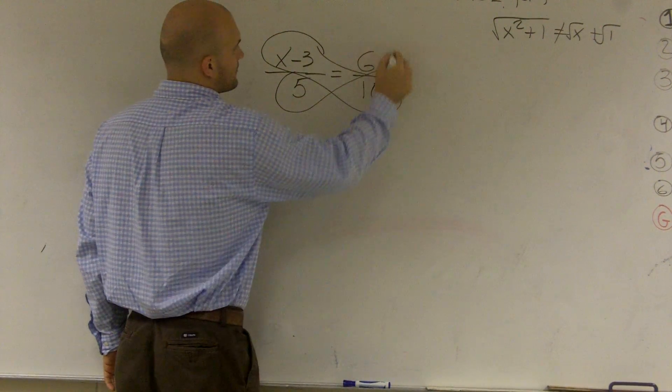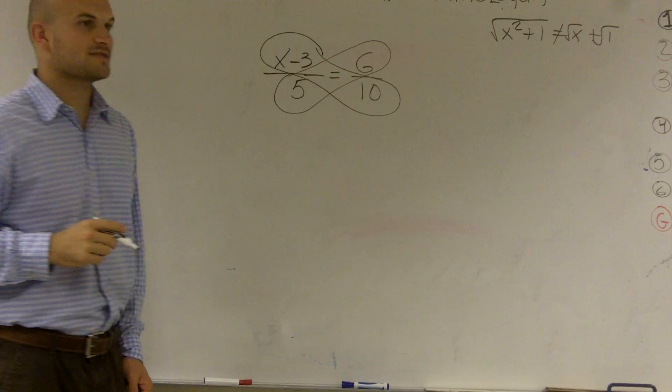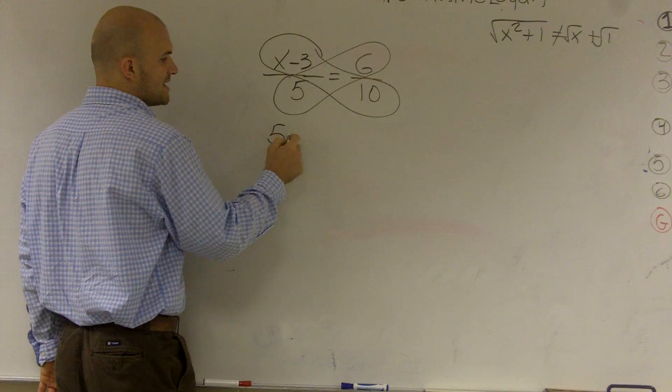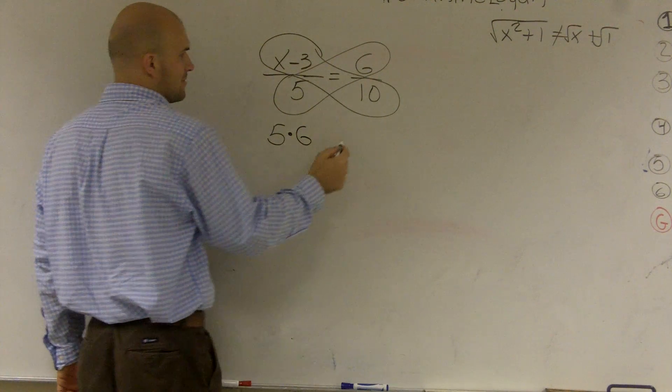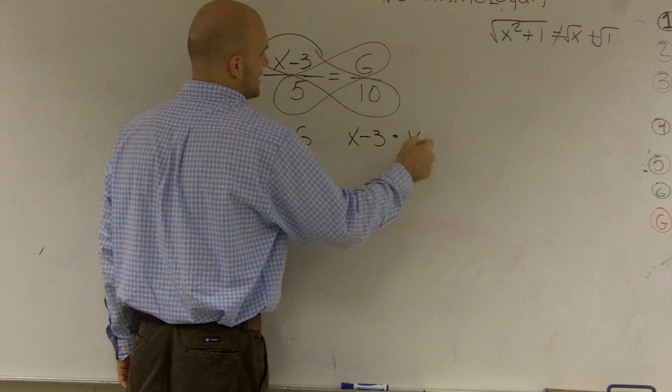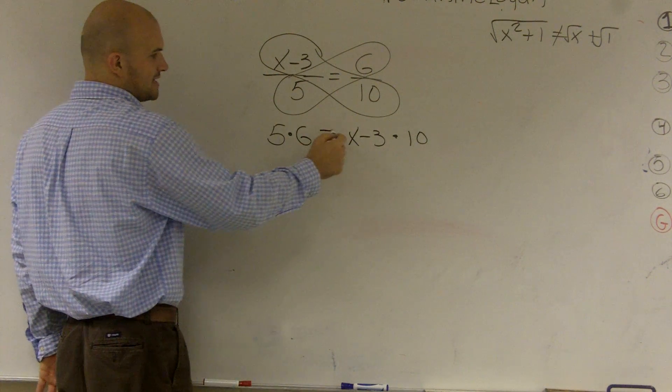You can circle your cross-products. So what you're going to do is find the product of these, which is called your cross-products. So I can multiply 5 times 6 and I can multiply x minus 3 times 10. And don't forget, there's an equal sign that's still there.